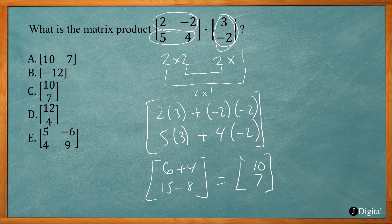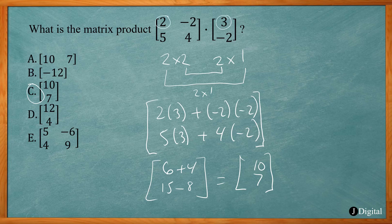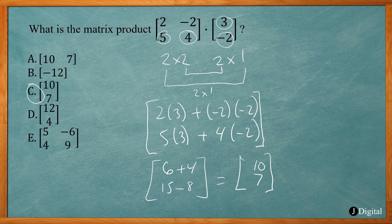5 times 3 is 15 plus negative 2 times 4 is negative 8, which gives us 10. So our 2 by 1 result is 10 and 7, giving us answer C.